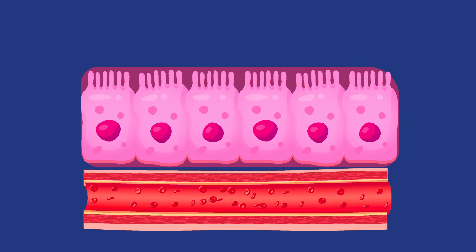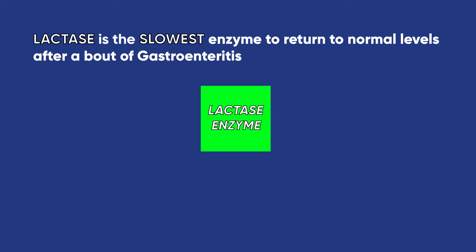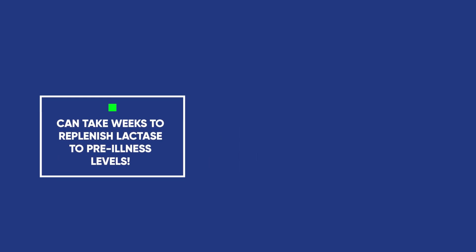After the body's immune system has successfully cleared the infection, the inflammation and damage to the gut lining persists. Slowly, the mucosal lining will repair itself and start to replenish the lost enzymes. There are many types of enzymes responsible for breaking down different sugar molecules. The slowest to get replenished is an enzyme called lactase. Lactase is responsible for breaking down the sugar molecule lactose to its smallest absorbable subunits called galactose and glucose. Lactase can take weeks to replenish to pre-illness quantities.